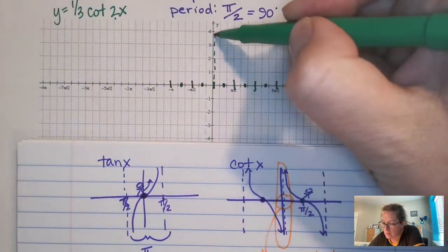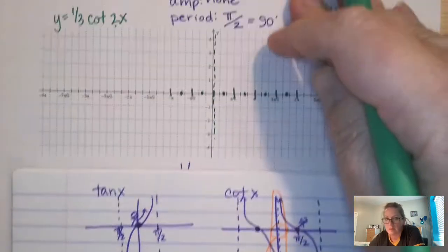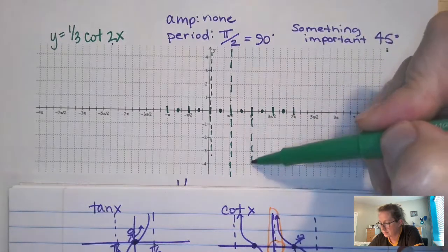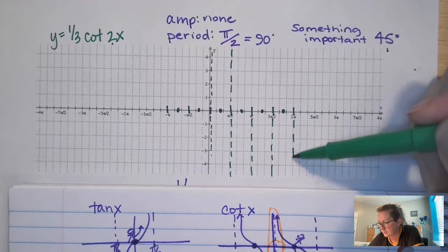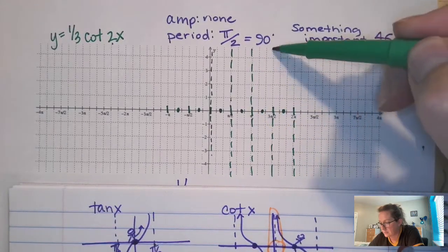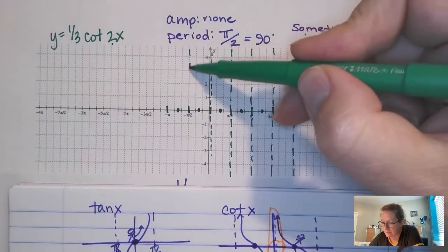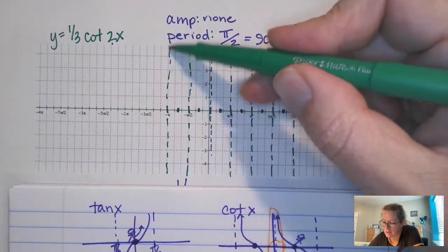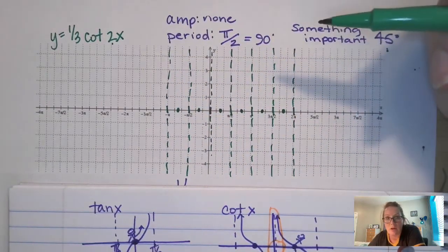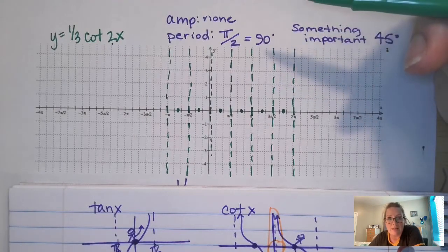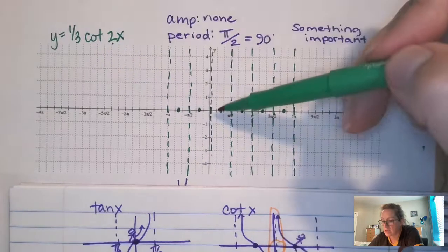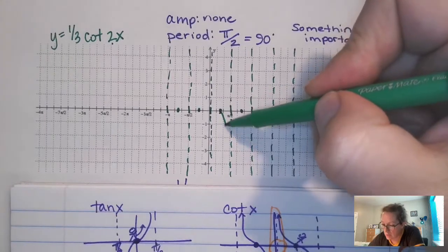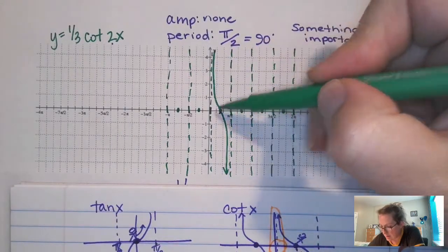And now I can draw my asymptote. Isn't that fun? Kind of feel like Bob Ross. It's a happy little tree. It's a negative function because it's cotangent. Not a negative function. I shouldn't say negative. It's a decreasing function. So, from the zeros, we are decreasing.